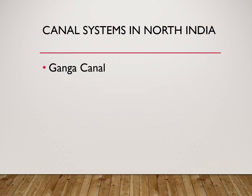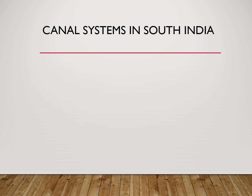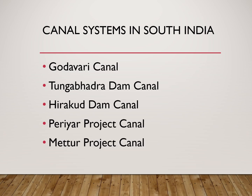Some of the canals found in north India are: the Ganga Canal made on the Ganga river, the Nangal Dam Canal built on the Satlaj river, and the Indira Gandhi Canal which is also built on the Satlaj river and carries water through the Thar Desert up to Jaisalmer in Rajasthan. The Chambal Project Canal is constructed on the Chambal river. Canal systems in south India include the Godavari Canal, Tungabhadra Dam Canal, Hirakud Dam Canal built on the Mahanadi river, and the Periyar and Mettur Canals built on the Kaveri river.